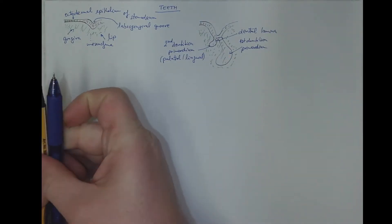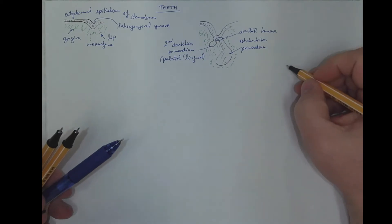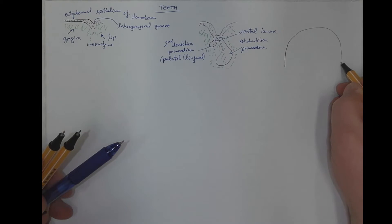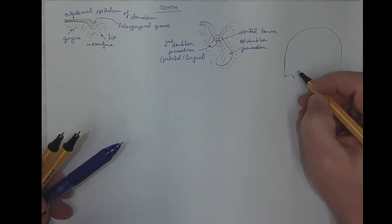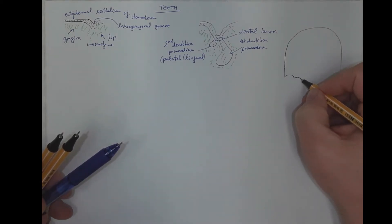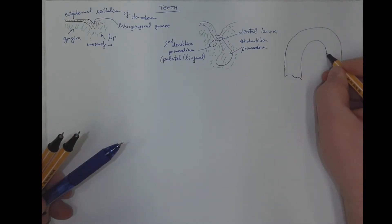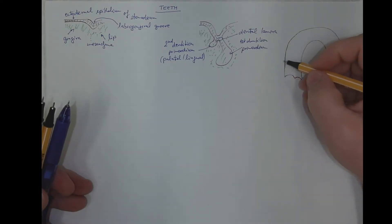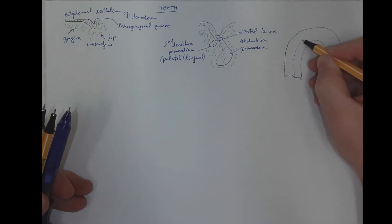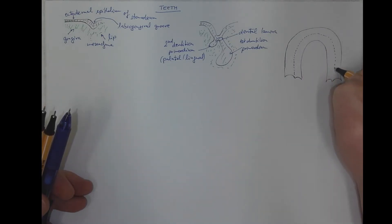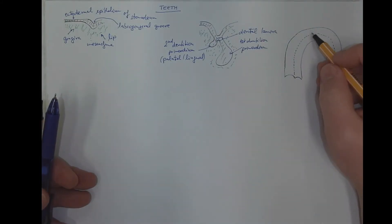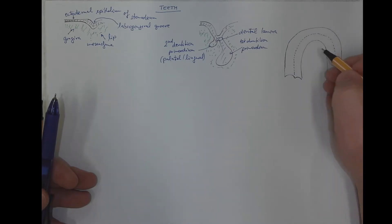If we look at the jaw — and this process is similar in the upper and lower jaw — we'll notice the labio-gingival sulcus here, separating the labium, the lip, from the gingiva. And here we have five primordia for the first dentition.